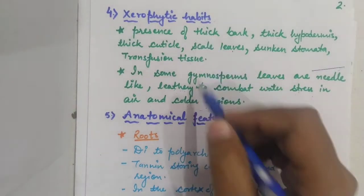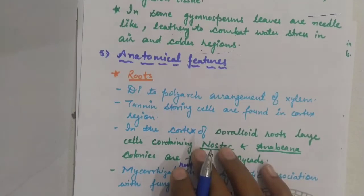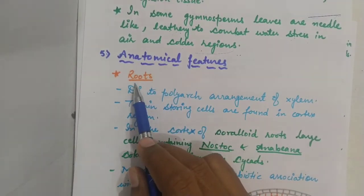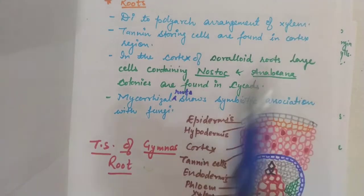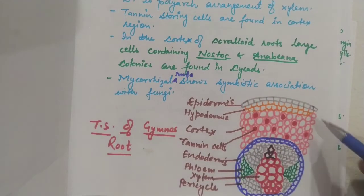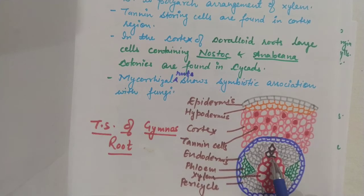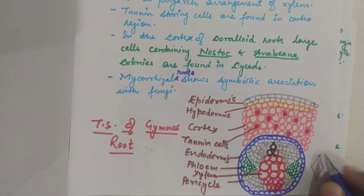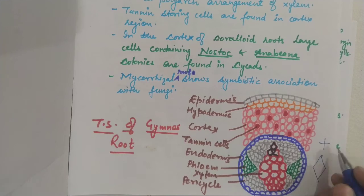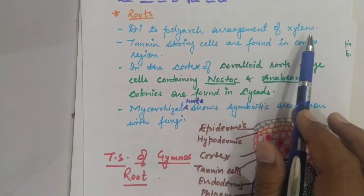So these are the xerophytic habits and morphological characters. Now for anatomical features: in the root, xylem is arranged in a diarch to polyarch arrangement. Diarch means two arcs, tetrarch means four arcs, and polyarch means many arcs — so the arrangement is diarch to polyarch.